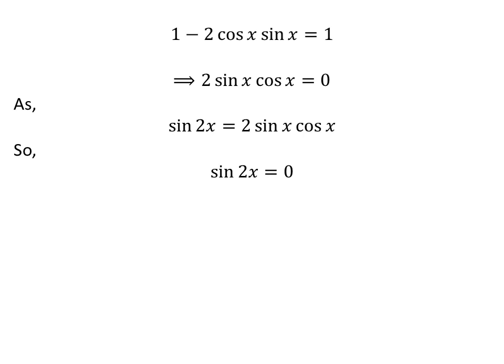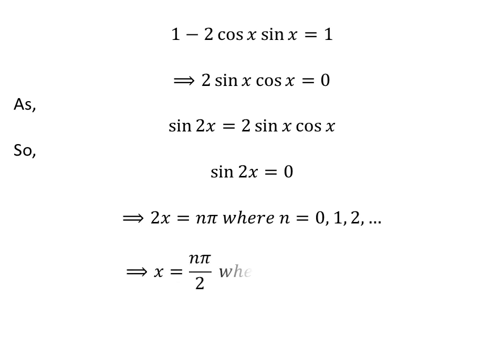Applying this trigonometry identity gives us: sine of 2x is equal to 0. Sine of 2x equals 0 is only possible when 2x is equal to n times pi, where n is 0, 1, 2, and so on. Taking 2 to the left gives us x equals n times half of pi.